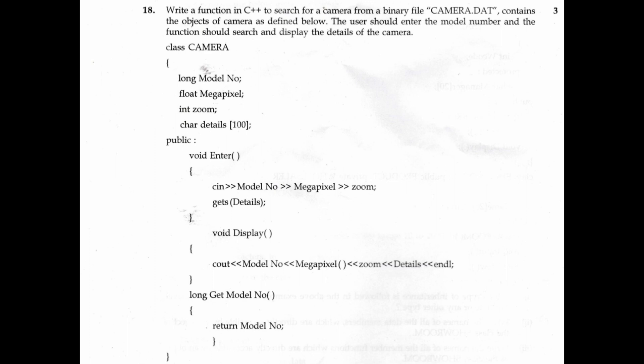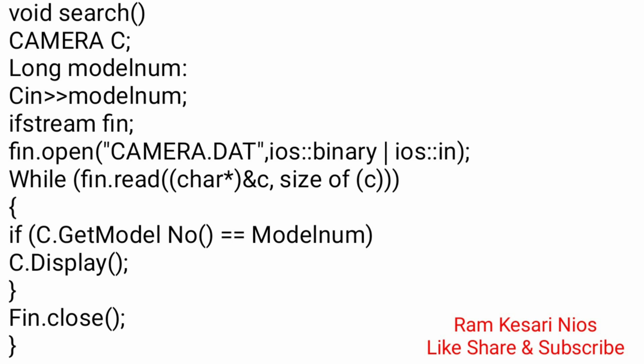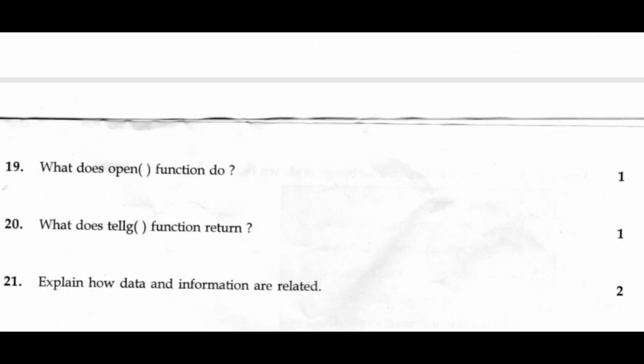Question 18: Write a function in C++ to search for a camera from a binary file camera.dat that contains objects of class camera. The user enters the model number and the function searches and displays the camera details. class camera { long model_number; float megapixel; int zoom; char details[100]; public: void enter() { cin >> model_number >> megapixel >> zoom; gets(details); } void display() { cout << model_number << megapixel << zoom << details << endl; } long get_model_number() { return model_number; } }; void search() { camera c; long model_number; cin >> model_number; ifstream fin; fin.open("camera.dat", ios::binary | ios::in); while(fin.read((char*)&c, sizeof(c))) { if(c.get_model_number() == model_number) c.display(); } fin.close(); }